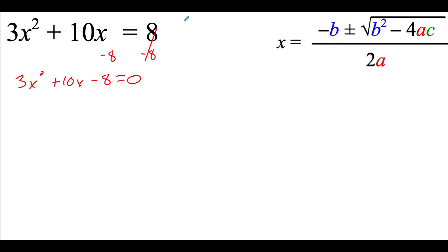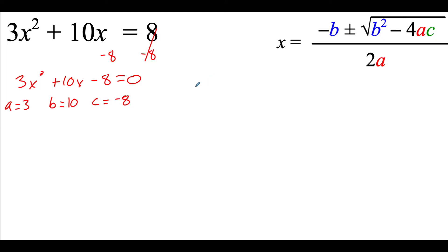Now that we've got it equal to zero, we're going to go ahead and identify our a, b, and c values. So our a is the number in front of the x squared, so that's 3. Our b is the number in front of the plain x, so that's 10. And our c is the number on the end without any variable attached to it, so that's negative 8. Now that I know what my values are, I need to take them and plug them into the quadratic formula where they belong.